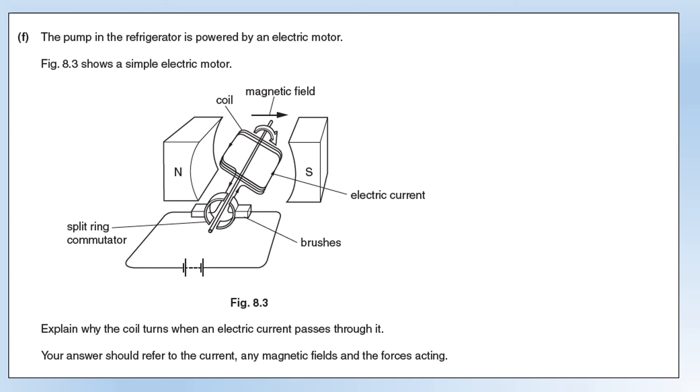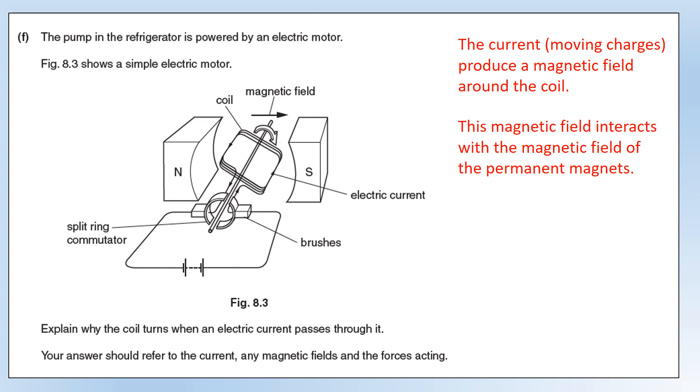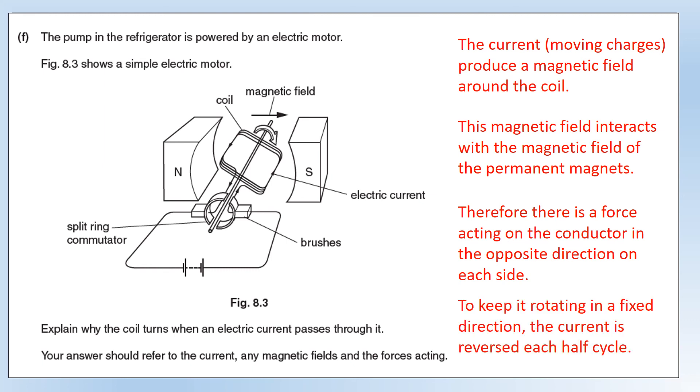The pump in the refrigerator is powered by an electric motor. Explain why the coil turns when electric current passes through it. Your answer should refer to current, magnetic fields, and forces acting. The current is essentially moving charges around the coil. Moving charges produce a magnetic field. The magnetic field from the coil is going to interact with the magnetic field from the permanent magnet, so you can see beside the coil. The interaction of the two fields is going to produce a force. That's what happens when two fields of the same type interact. The force is going to act in the opposite direction on each side of the motor. So they're both going to act to rotate it in the same direction. To make it keep rotating in the same direction, we have to flip the current every half cycle, which is what the function of the commutator and the brushes is.